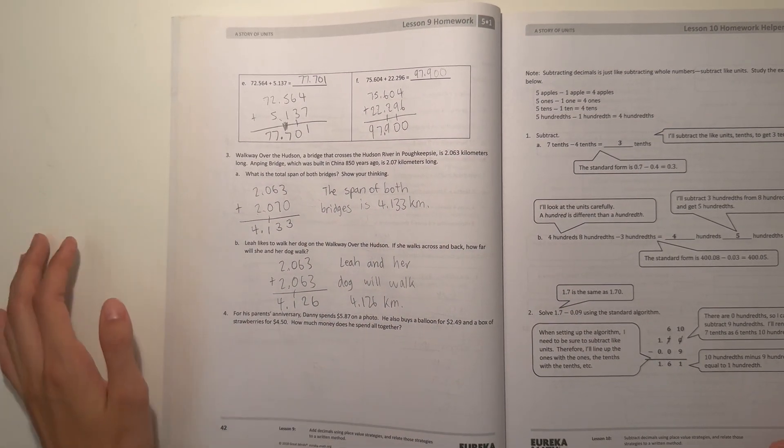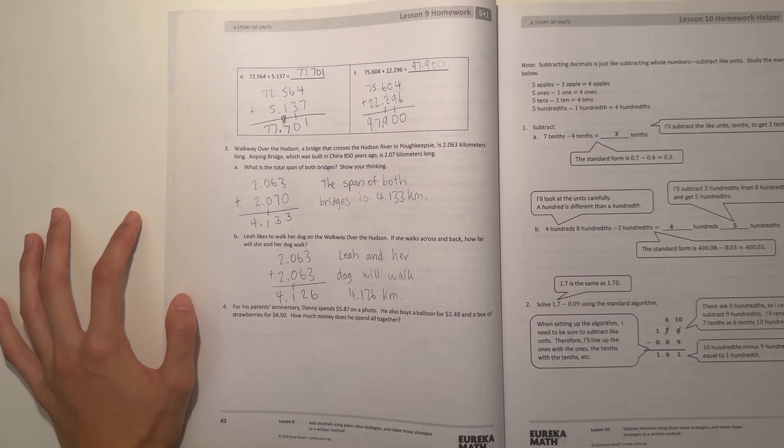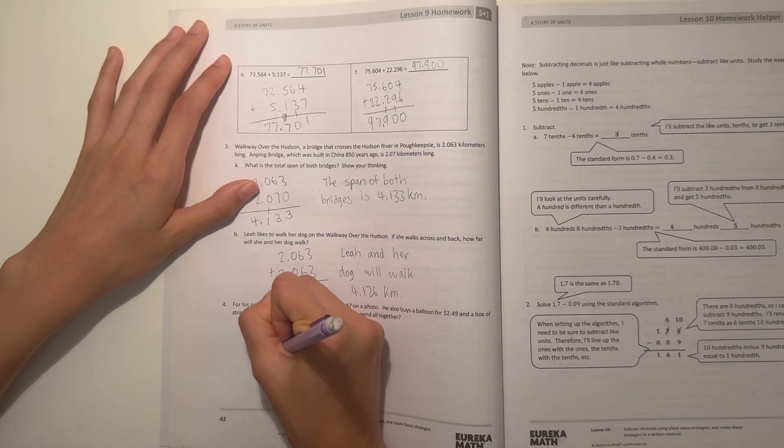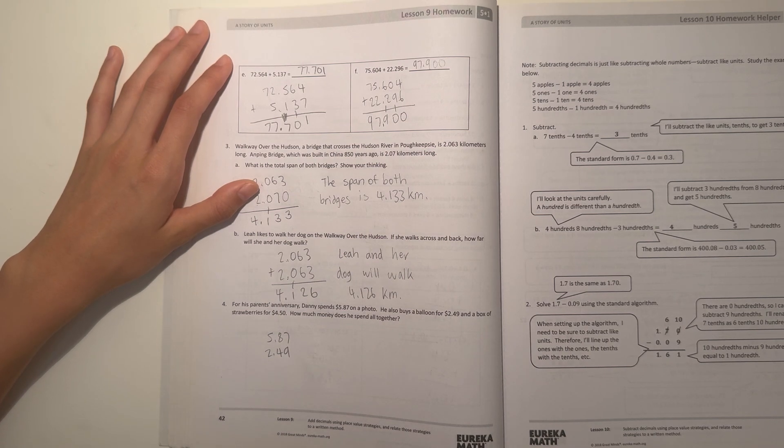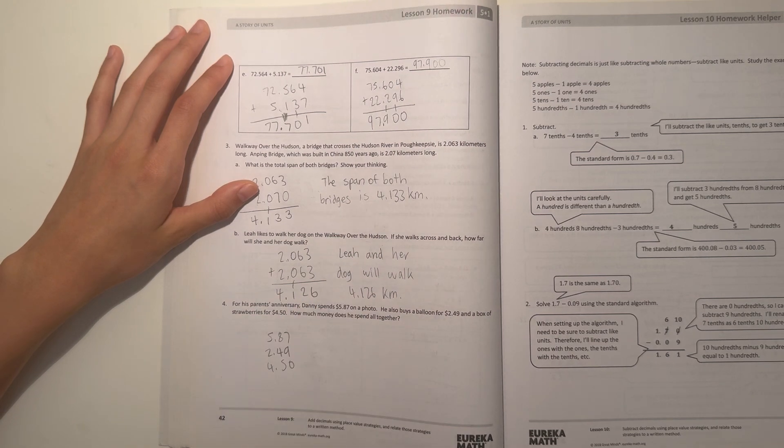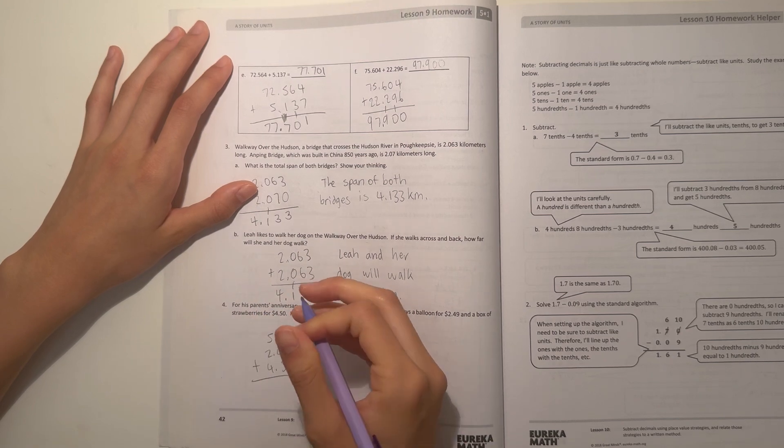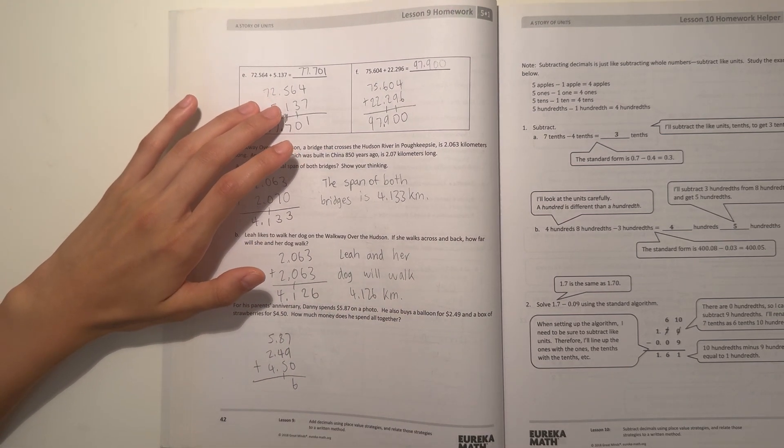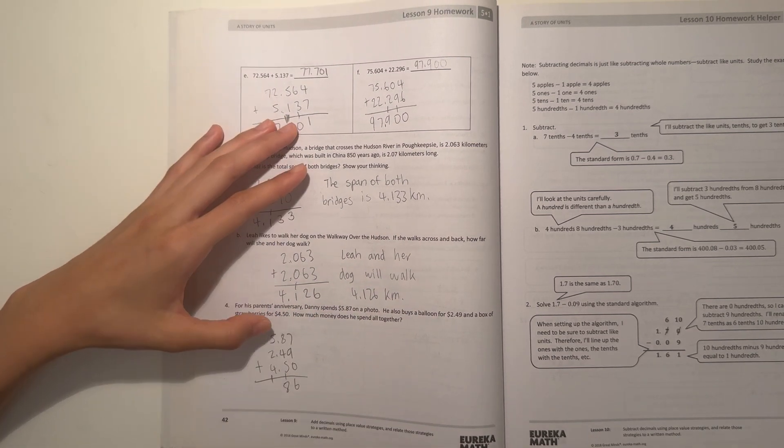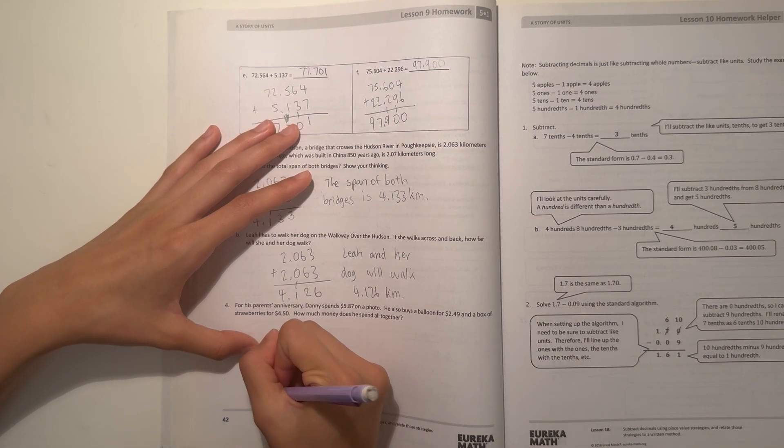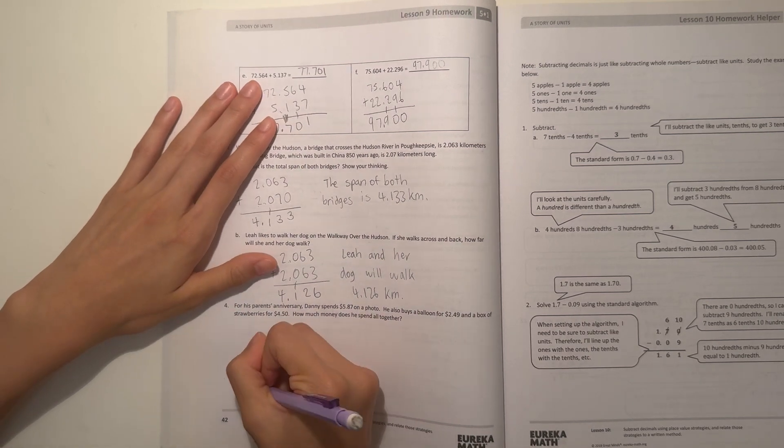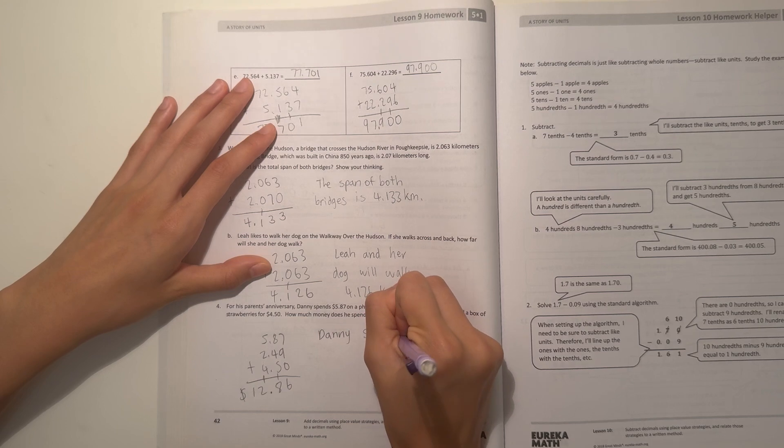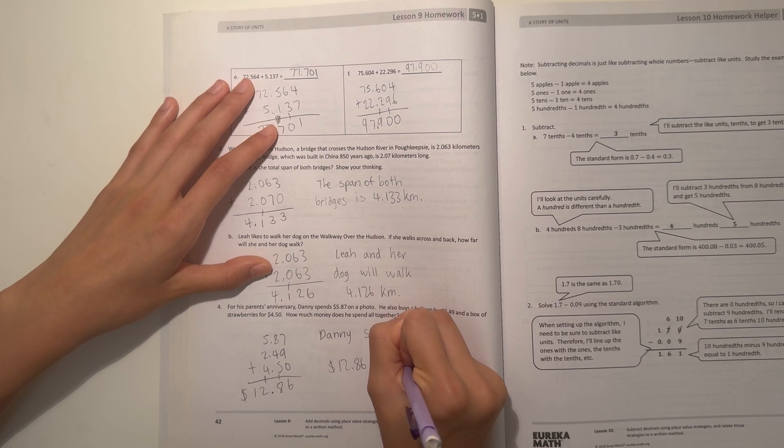Alright, and number 4. For his parents' anniversary, Danny spends $5.87, that's 5.87, on a photo. He also buys a balloon for $2.49, 2.49, and a box of strawberries for $4.50, so 4.50. How much money did he spend all together? So let's add. 7 plus 9 is 16, plus 0 is 16, so that's 16. 8 plus 4 is 12, plus 5 is 17, plus 1 is 18. And then 5 plus 2 is 7, plus 4 is 11, plus 1 is 12. And carry the decimal point down. $12.86. That means Danny spends $12.86 altogether.